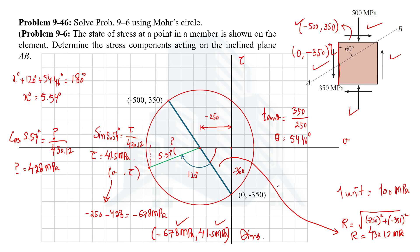So the state of stress at plane AB is a compressive normal stress of 678 MPa and a shear stress of 41.5 MPa. Keep in mind I am taking clockwise as positive shear stress. Since the value is negative 41.5 MPa, it means anti-clockwise shear stress is acting on plane AB. This is how we can calculate the state of stress at any required plane when given the state of stress at an element. Thank you for watching.